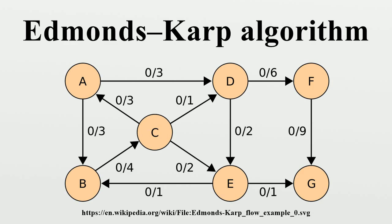Pseudocode for Edmonds-Karp: Input C, N, E, S, T. Output F. F equals 0. Repeat: M, P equals breadth-first search. If M equals 0, break. F equals F plus M. V equals T. While V not equal to S: update F[U][V] equals F[U][V] plus M, F[V][U] equals F[V][U] minus M. Return F.